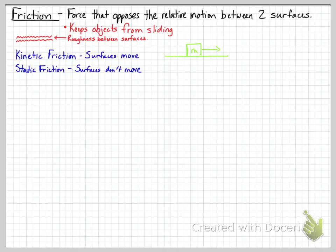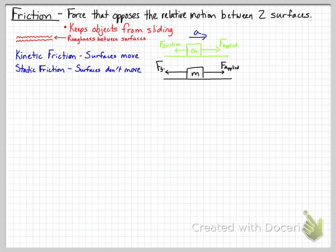We're going to have an object where we have a force applied to the right, and then friction acting on it to the left. I'll draw both examples — one for kinetic and one for static.